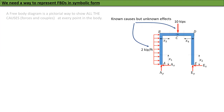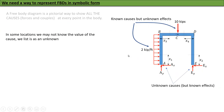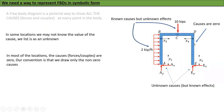Our fundamental task is that we need to find a way to represent free body diagrams in symbolic form. A free body diagram is a pictorial way to show all the causes — forces and couples — at every point in the body. Along a line A-B we know the causes, like the two-kip-per-foot force, and the ten-kip force — these are the known causes. But we don't know the effect on the system. In some locations we know the type of cause but not the magnitude, so unknown causes are also listed. In most locations we don't say anything because the causes are zero.